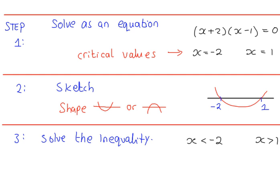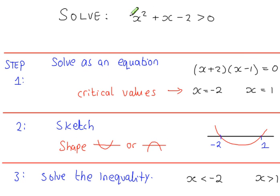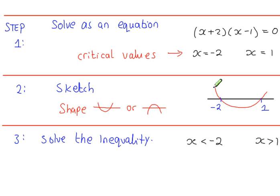Go back to what you were trying to solve. We're saying everything is greater than 0, so we're looking for the region of the curve above the x-axis. Looking at the sketch, that's this region corresponding to values of x which are less than minus 2, and this region corresponding to values of x which are greater than 1.